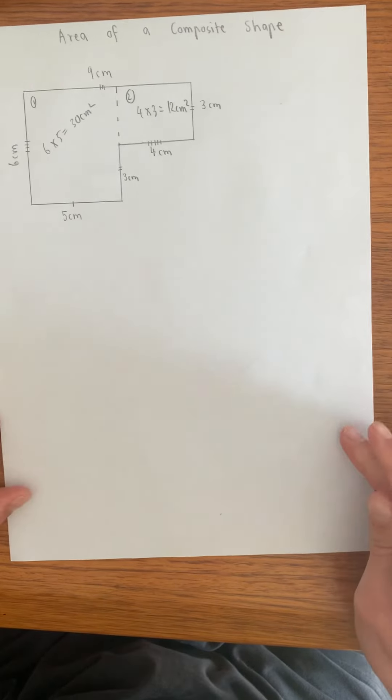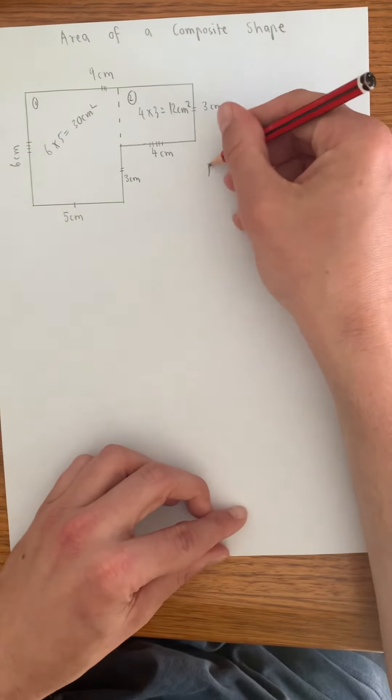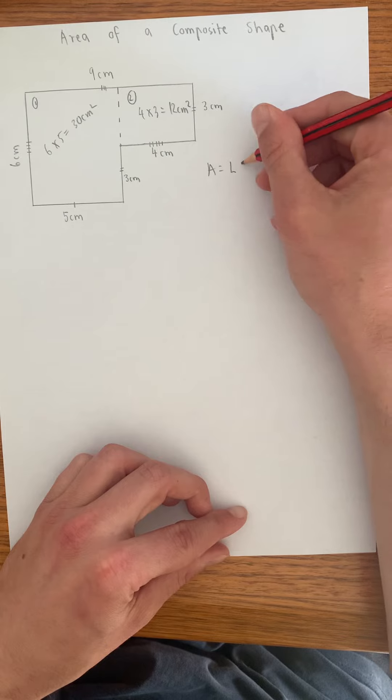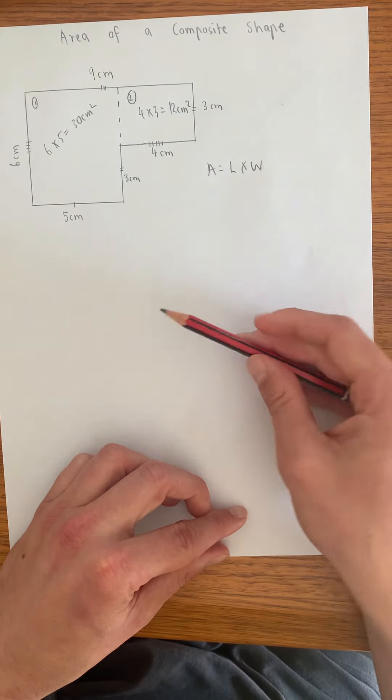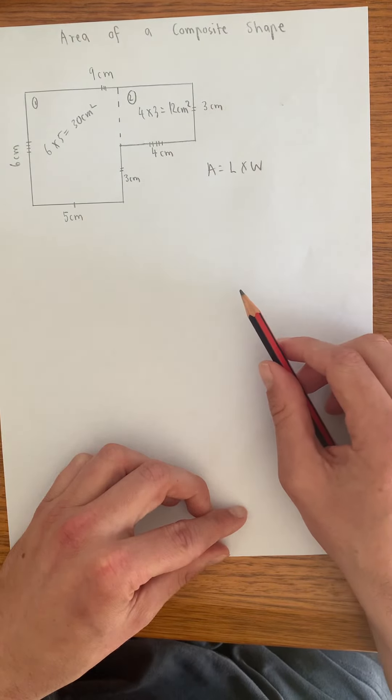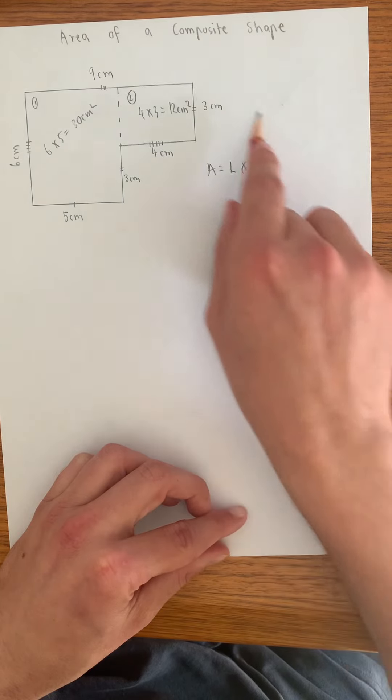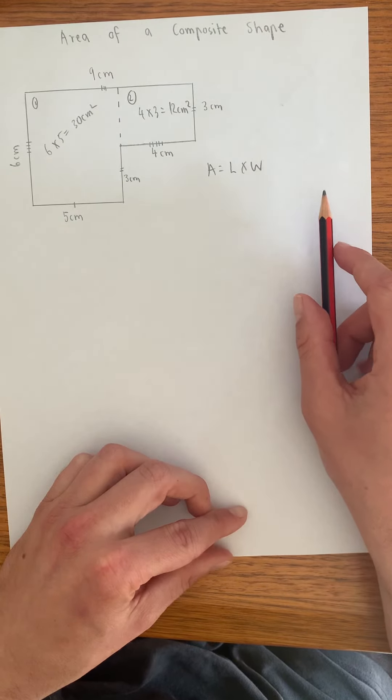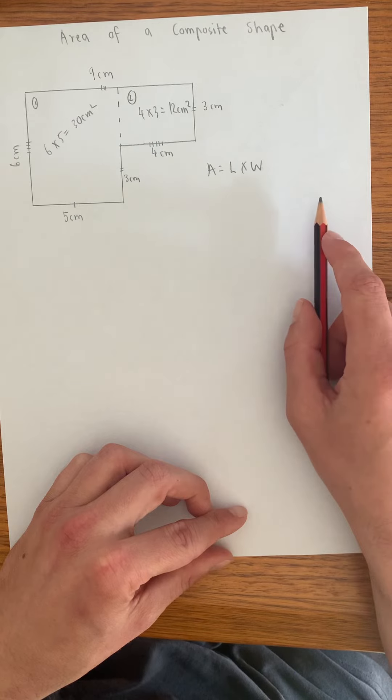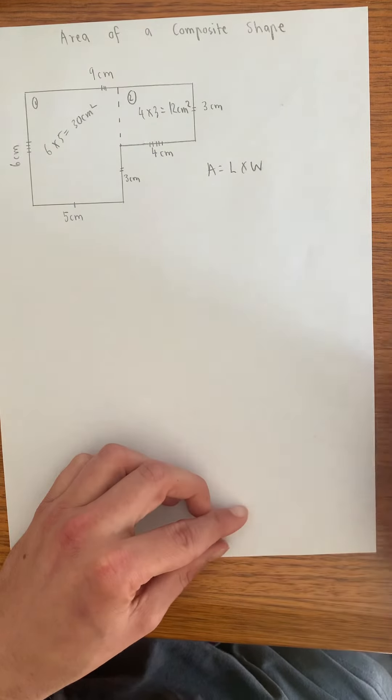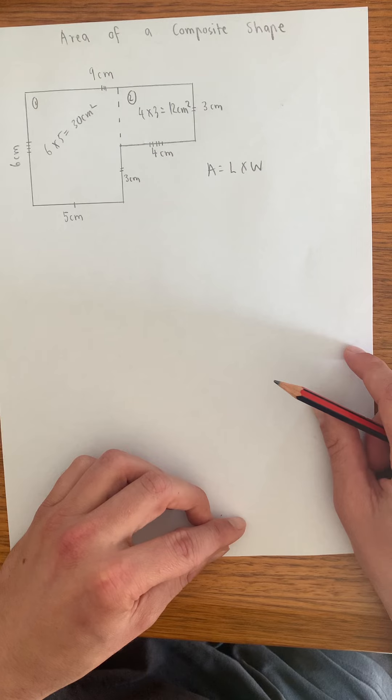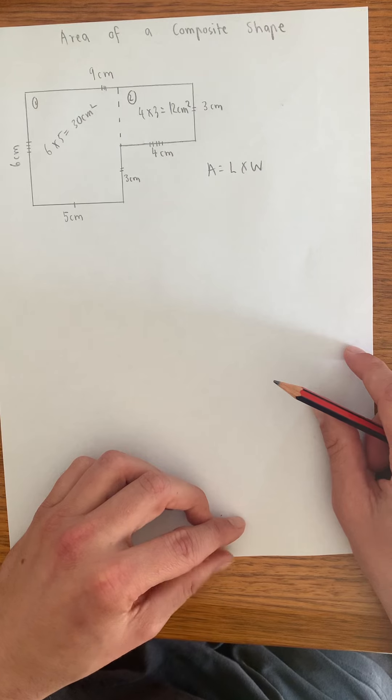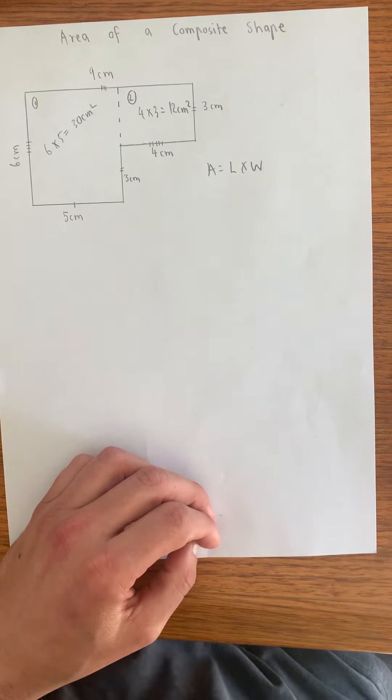So I guess what I'm showing you here is that the formula area equals length times width can be used for situations where you don't have a grid book. And really, that's where we would want you to go. So initially, it's good to use a grid book, but this is where we want you to go. So that is how we determine the area of a composite shape. Thanks, guys.